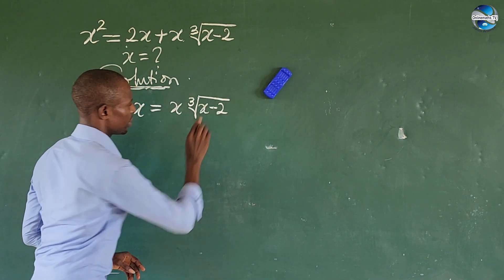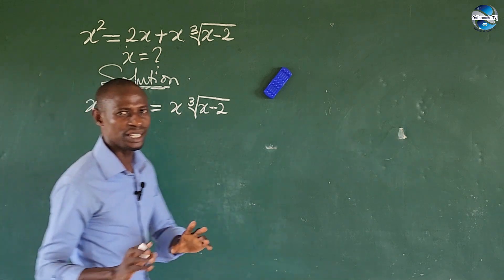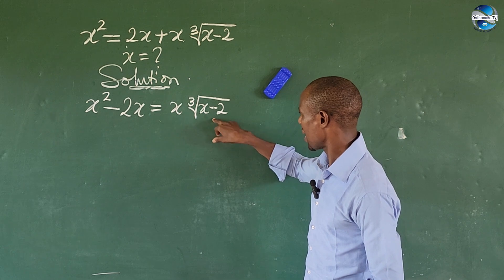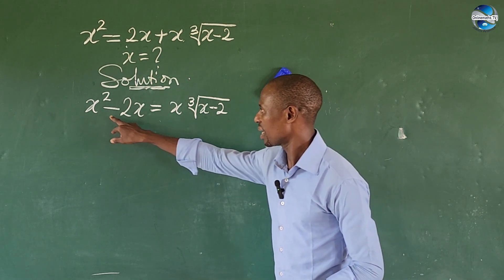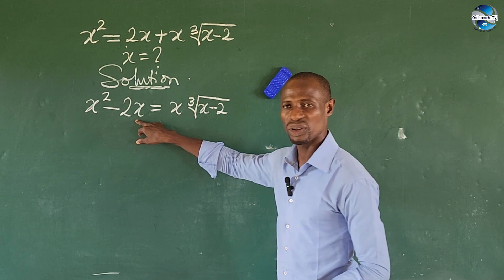If you look at this very well, something good is playing out here. We are having x minus 2. Look at this: if I factor out x from here, x minus 2 will also play out here.